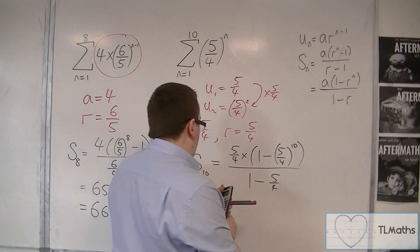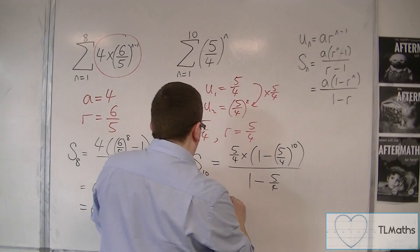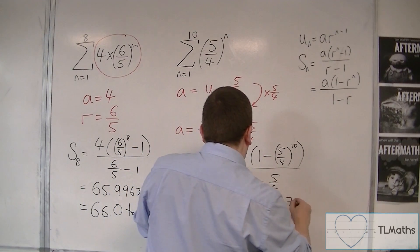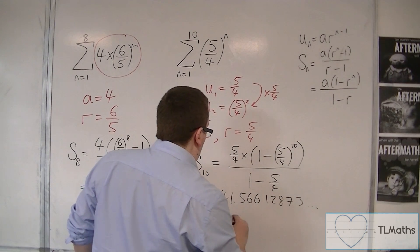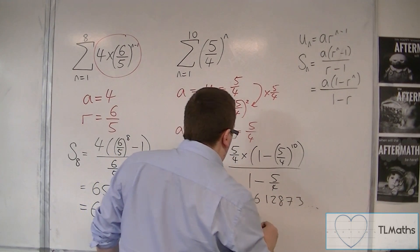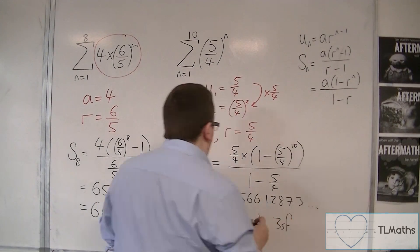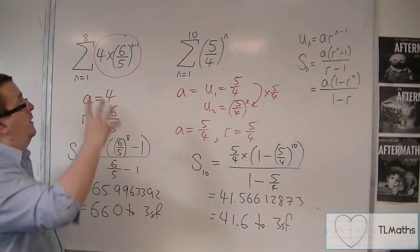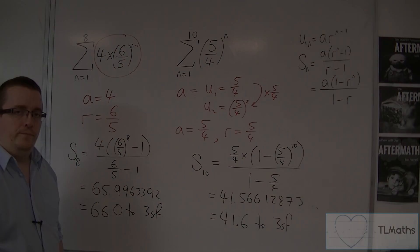And that gets me 41.56612873. So that's 41.6 to 3 significant figures. Okay, and that's how we can find the sum using sigma notation. Okay, so we will see it.